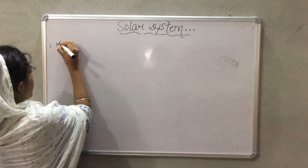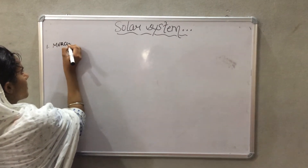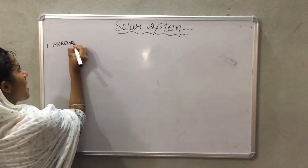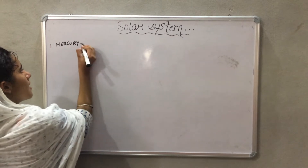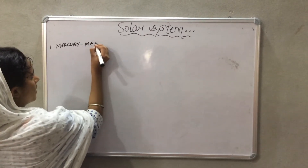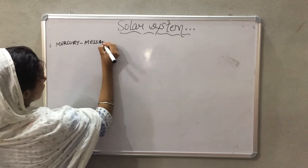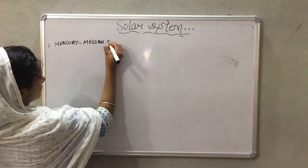First is Mercury. Mercury is named after the messenger of the Roman gods.